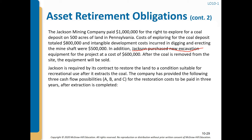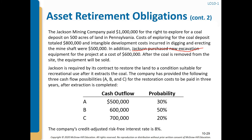The company has provided three cash flow possibilities A, B, and C for the restoration costs to be paid in three years after extraction is completed. Possibility A is $500,000 with 30% probability, B is $600,000 with 50% probability, and C is $700,000 with 20% probability. The credit-adjusted risk-free interest rate is 8%.